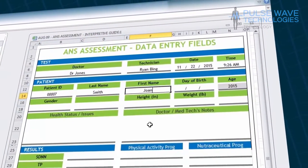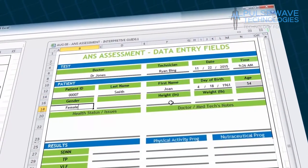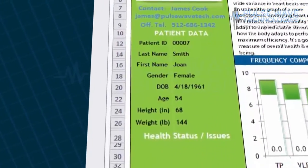Within the interpretive guides, you can input your patient's basic information like age, gender, height, weight, and ID number for the test, among other values.